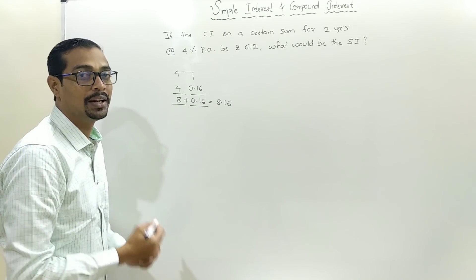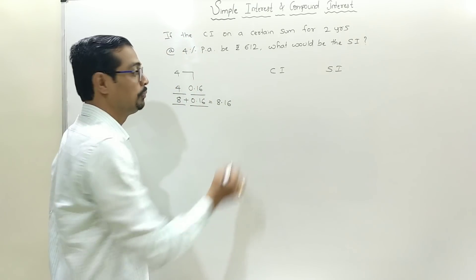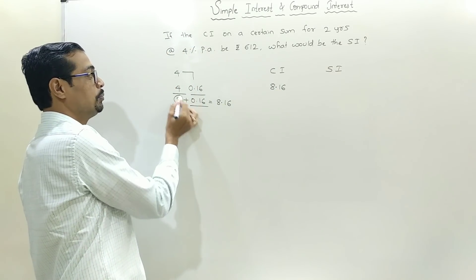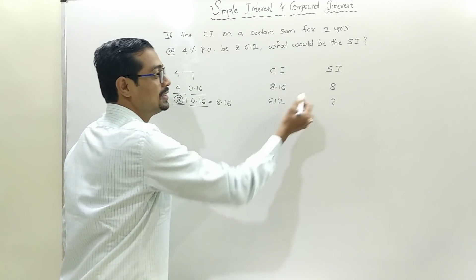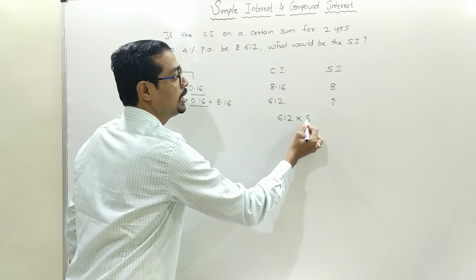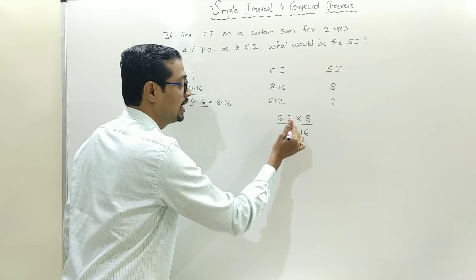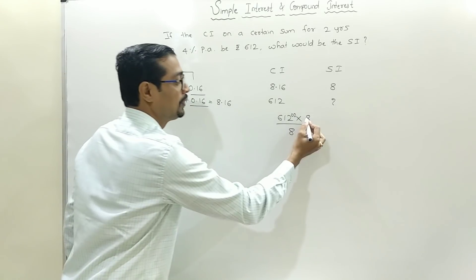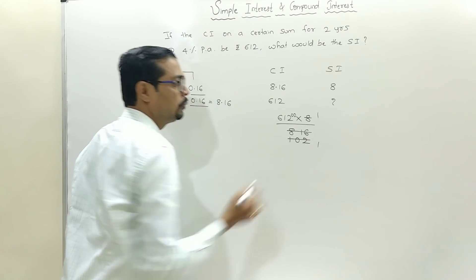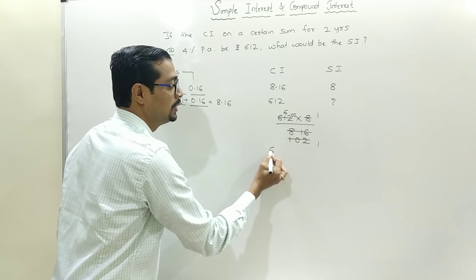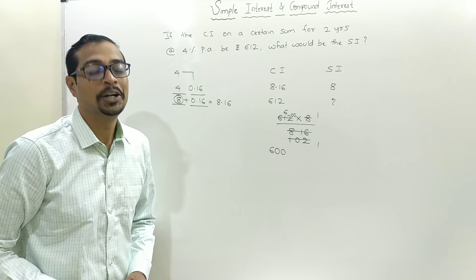Remember it forever. Now, apply the 3-rule. Left side compound interest, right side simple interest. For 8.16, simple interest is 8. For 612, find the simple interest. Just cross multiplication: 612 multiplied by 8, divided by 8.16. After the decimal there are 2 digits, so we add 2 zeros. Working through the division, simple interest is 600. So simple — if you practice it, you will crack this within 20 seconds.